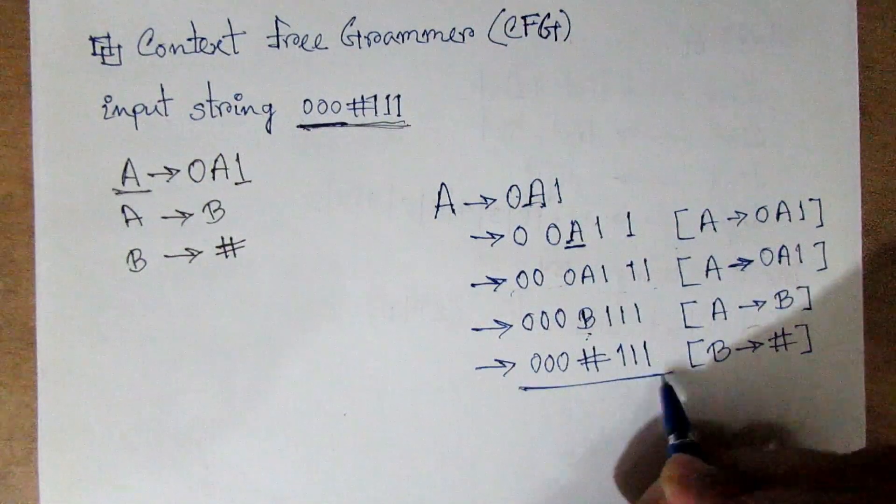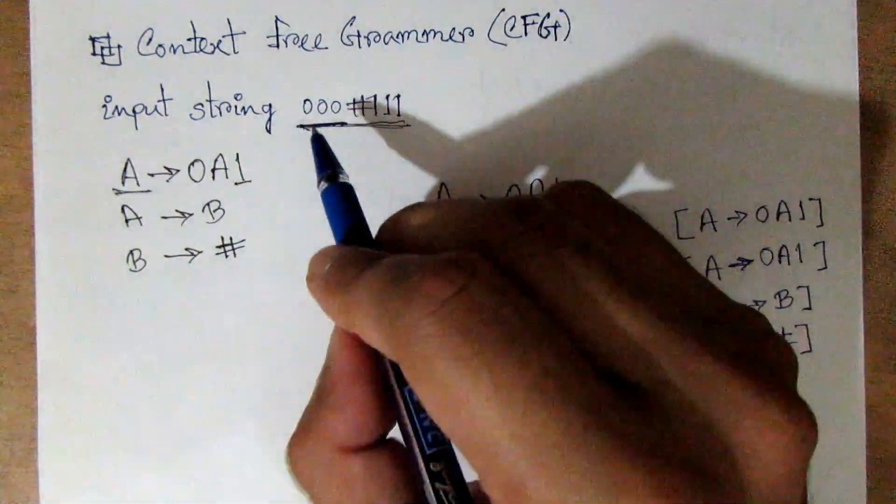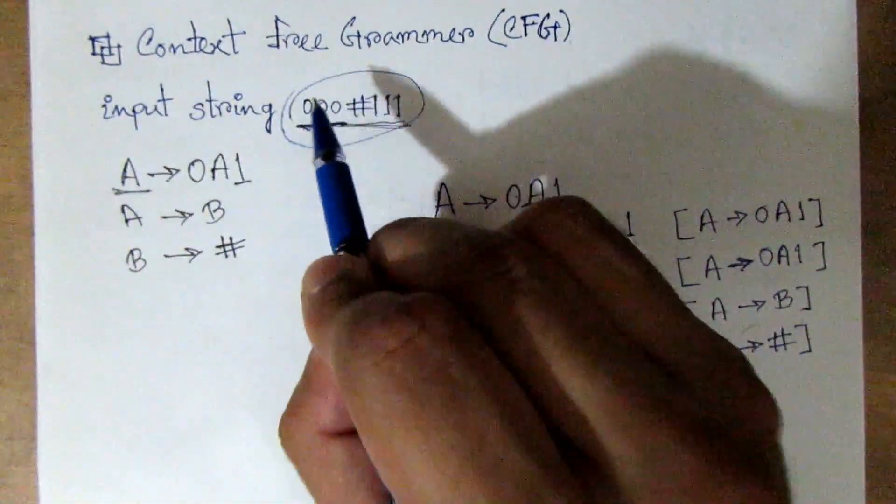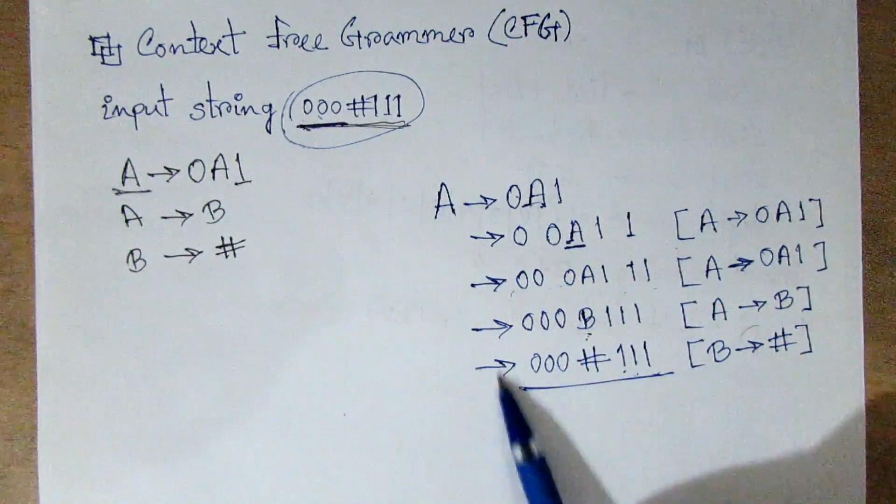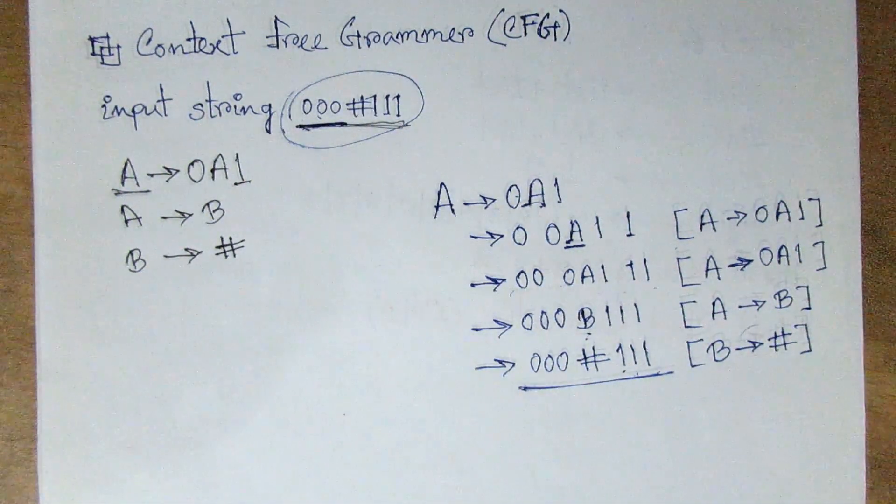So we are going to add the output string. Output string is 0, 0, 0, hash, 1, 1, 1.